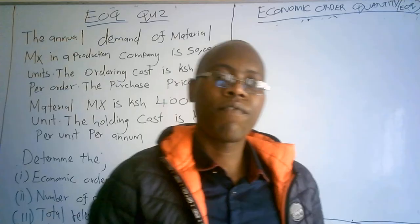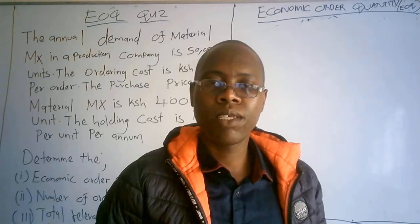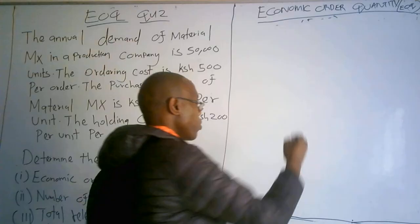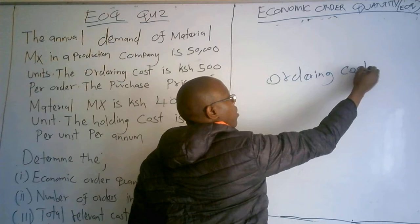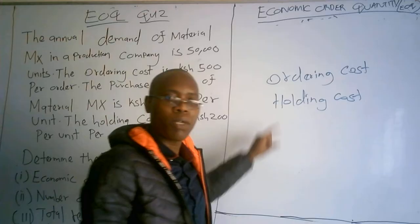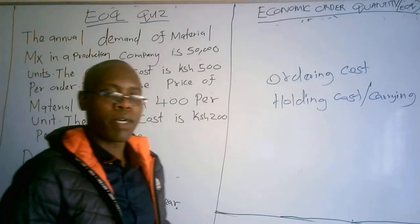Welcome to our class today. We are going to have a discussion on the economic order quantity. The economic order quantity is under a topic known as inventory control, and this particular economic order quantity is that quantity that is going to minimize the ordering cost and the holding cost — also called the carrying cost.